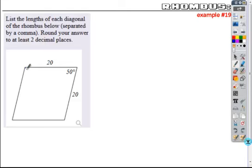What I would more than likely do is draw in my diagonals here. Because this is a rhombus, these diagonals meet at a right angle, and the diagonals are bisected because it is a parallelogram. And so that's going to cut this angle in half, giving me a 25 degree angle here.